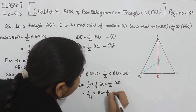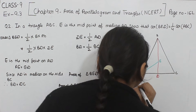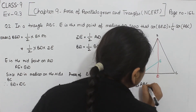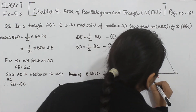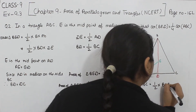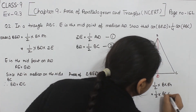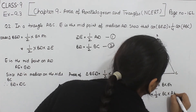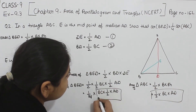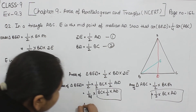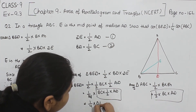Now for triangle ABC, the area equals one-half multiplied by base BC into perpendicular height AD. So the expression one-half times BC times AD is exactly the area of triangle ABC. Therefore, we can write: area of triangle BED equals one-fourth multiplied by area of triangle ABC.